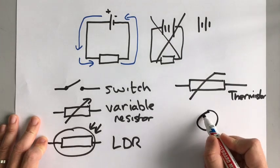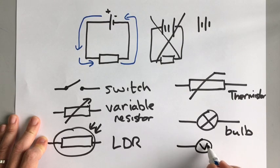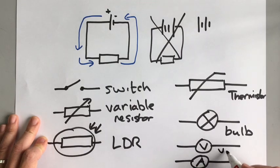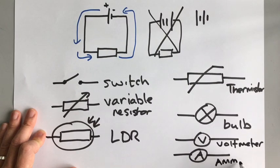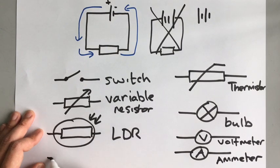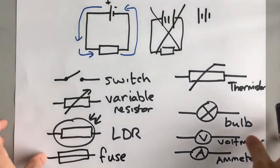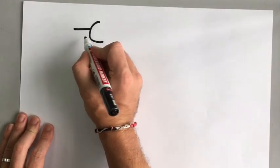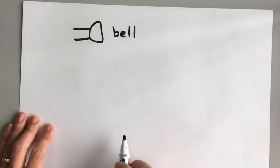A bulb is drawn as a simple X in a circle. We already talked about a voltmeter and an ammeter in the last video — one measures the potential difference and the other measures the current. You also need to know about a fuse, which is a safety device we'll talk about in a different video. You need to know what the symbol for a bell is — something that makes a ringing sound — it looks like a backwards capital D with two wires coming into the curved part.